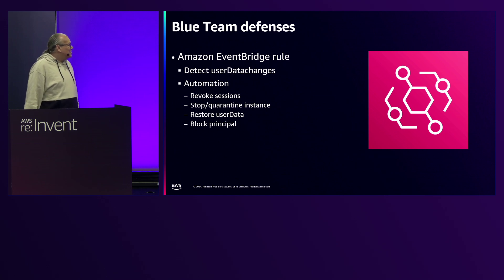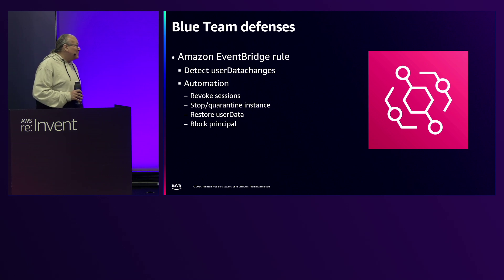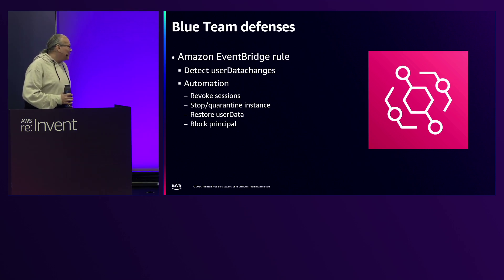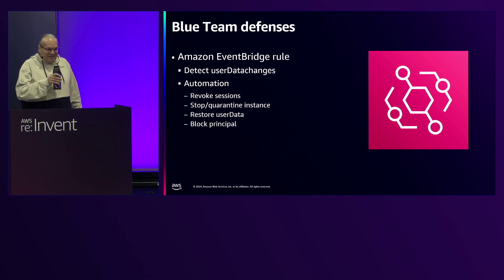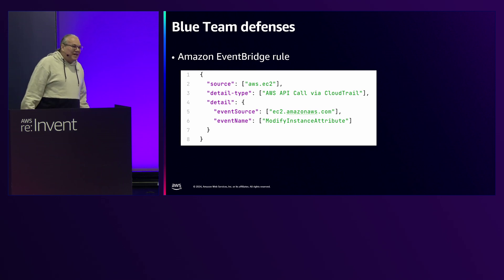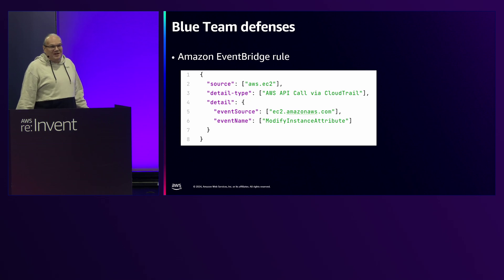Another thing you can do is use EventBridge to detect changes to the user data. That's not something that would typically change, so setting up an alert in EventBridge is a good idea. That can be backed by a Lambda function to do automation such as revoke sessions, stop or quarantine an instance, restore the user data, or block the principal that made the change. In EventBridge, you can't create an event specifically for user data, so you have to use modify instance attribute and then use Lambda to check if it was user data that changed.